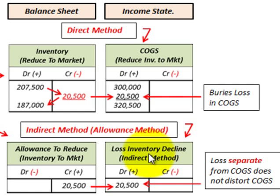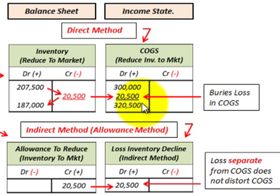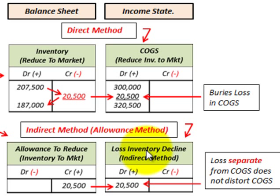With the indirect method, we recognize the loss on the income statement, and that loss is separate from cost of goods sold — it does not distort cost of goods sold. In contrast, with the direct method, you include this loss directly into your cost of goods sold. With the indirect or allowance method, you set up a separate account for the loss due to the decline in inventory, debiting it by $20,500.